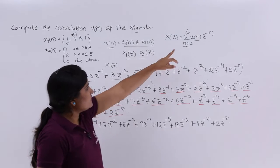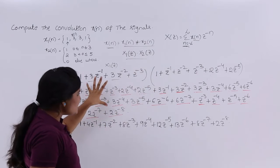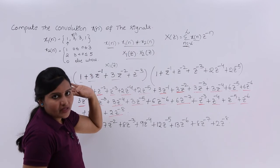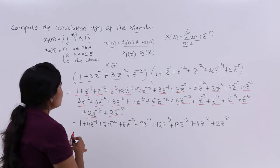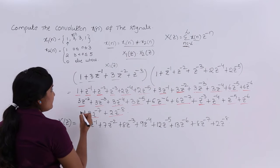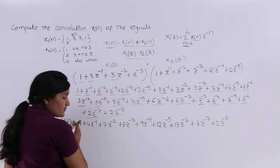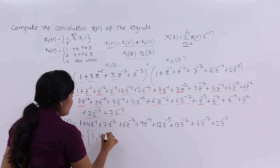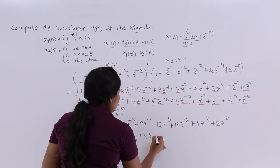Now comparing this result with the summation formula, I calculated in the Z domain. We do not want the transform — we want the convolution result in the time domain. From X(Z), which is X1(Z) × X2(Z), we get X[N] by taking the coefficients. So X[N] = {1, 4, 7, 8, 9, 12, 13, 8, 2}.